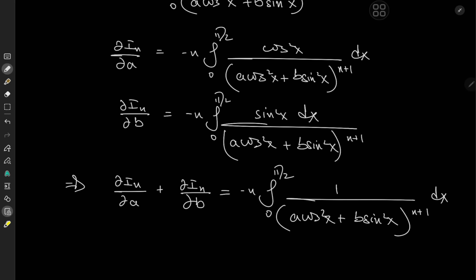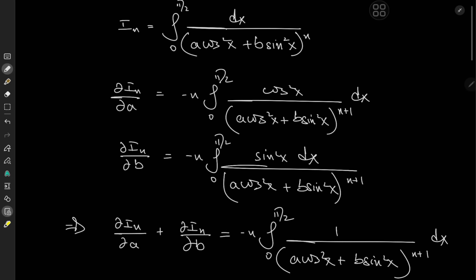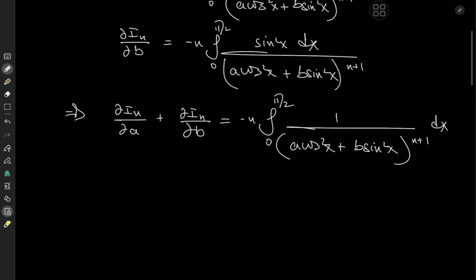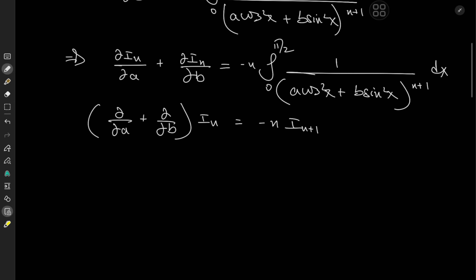We have cosine squared up top and sine squared up top in the other derivative of the integral. This implies that if we add up these two derivatives — partial I sub n over partial a plus partial I sub n over partial b — equals negative n, and using linearity of integration to combine them, we get cosine squared x plus sine squared x up top, which cancels to 1, over (a cosine squared x plus b sine squared x) to the n plus 1. That looks like I sub n plus 1. So the differential operator (partial over partial a plus partial over partial b) acting on I sub n equals negative n times I sub n plus 1. This gives us a partial differential equation with a recursion touch to it.